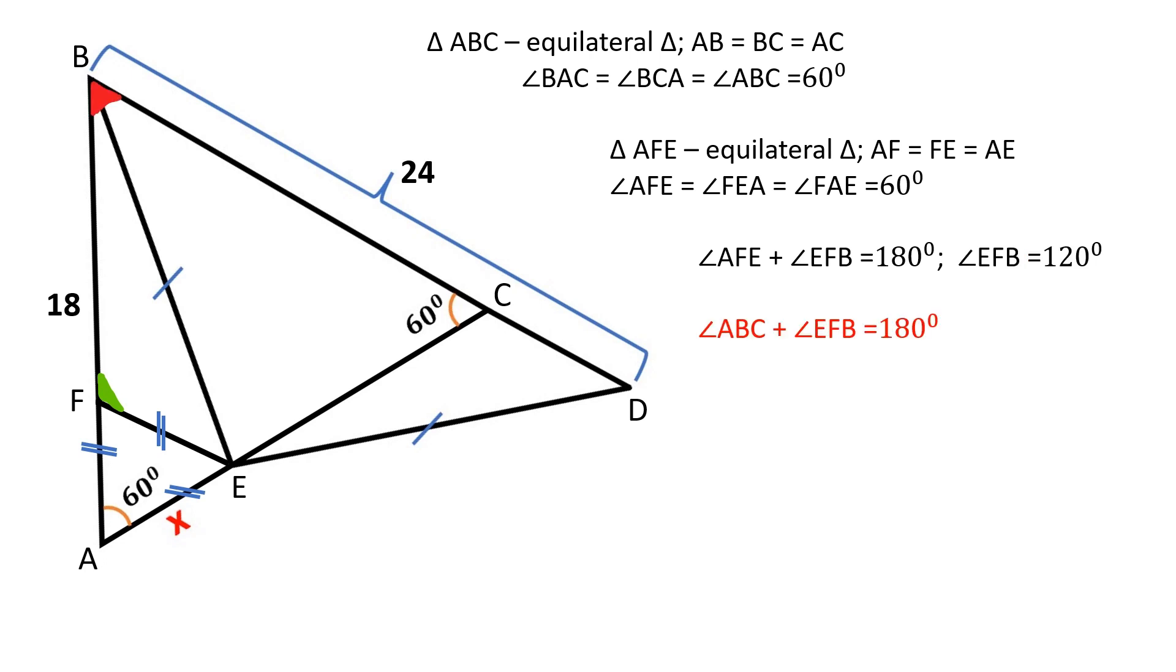Since the sum of angles ABC and EFB is equal to 180 degrees, FE is parallel to BC because if same side interior angles are supplementary, then the lines are parallel.